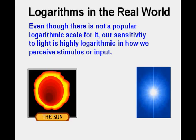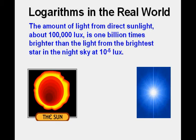Even though there is not a popular logarithmic scale forward, our sensitivity to light is highly logarithmic in how we perceive stimulus or output. The amount of light from direct sunlight, about 100,000 lux, is one billion times brighter than the light from the brightest star in the night sky at 10 to the negative 5th lux.